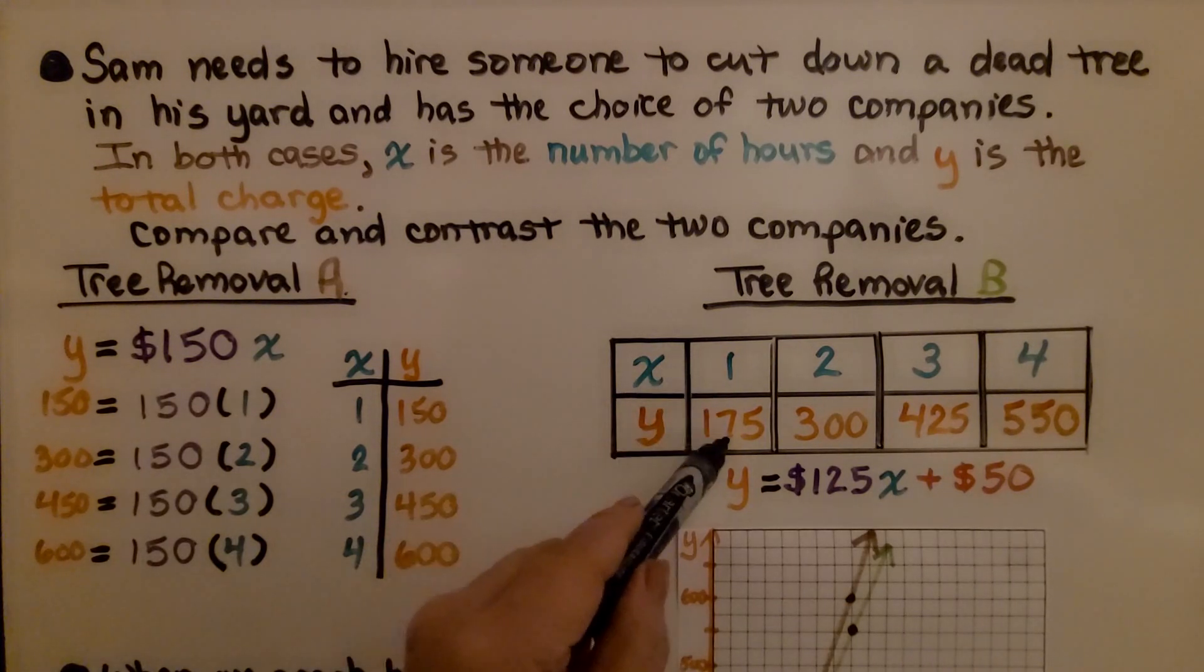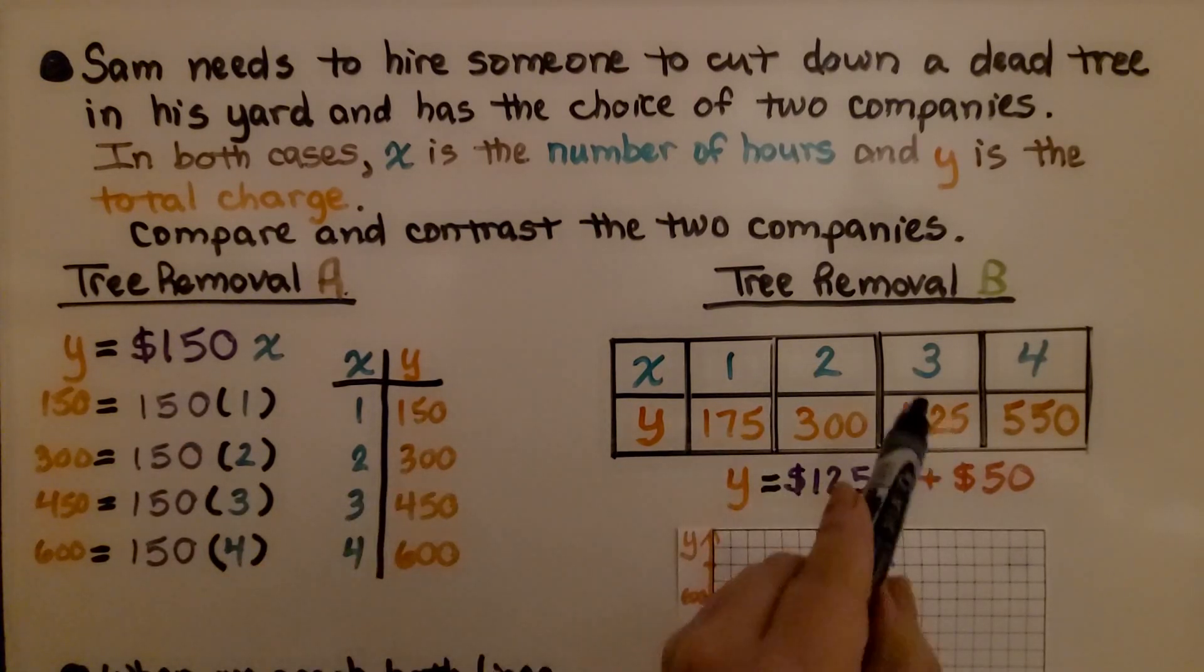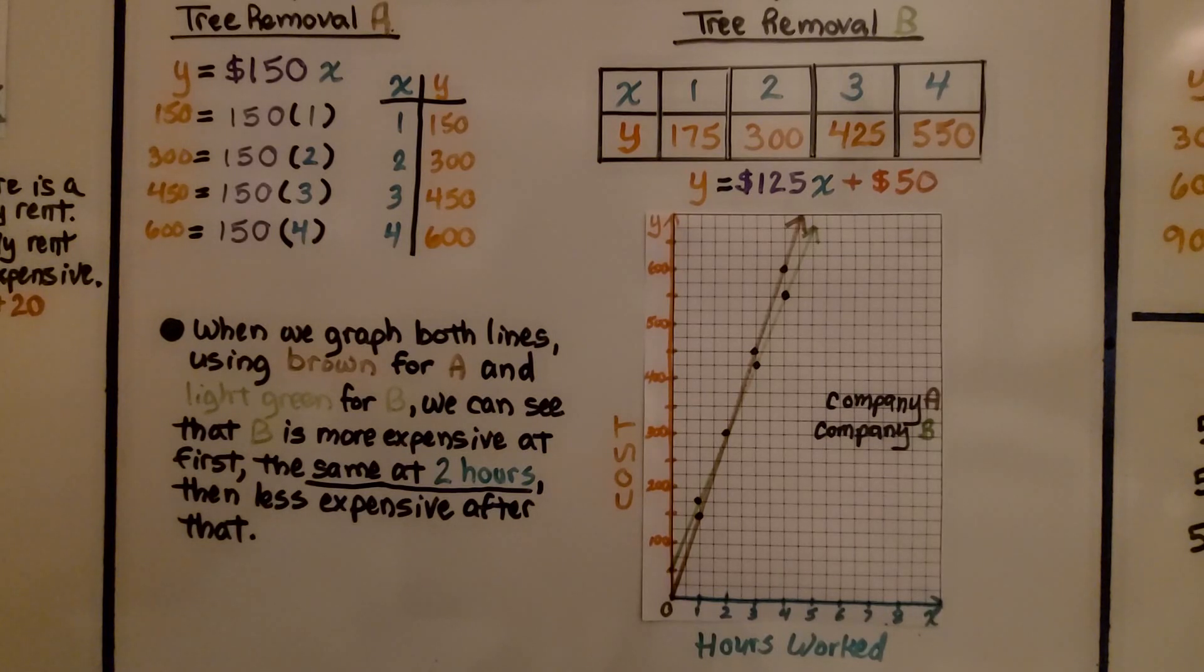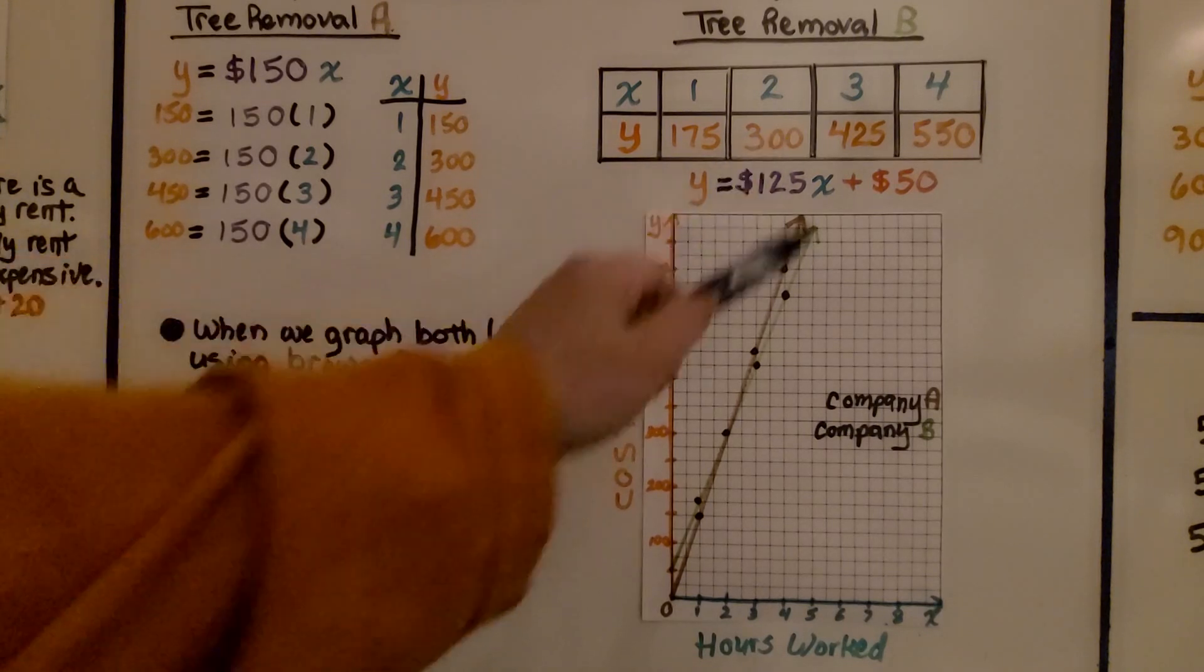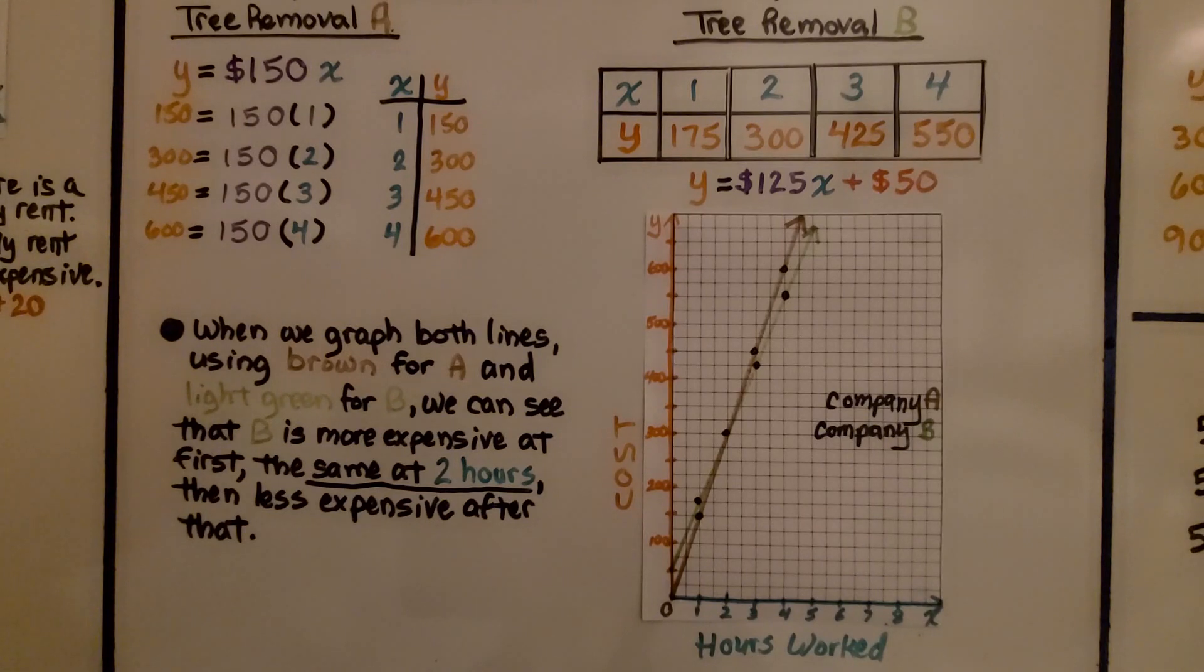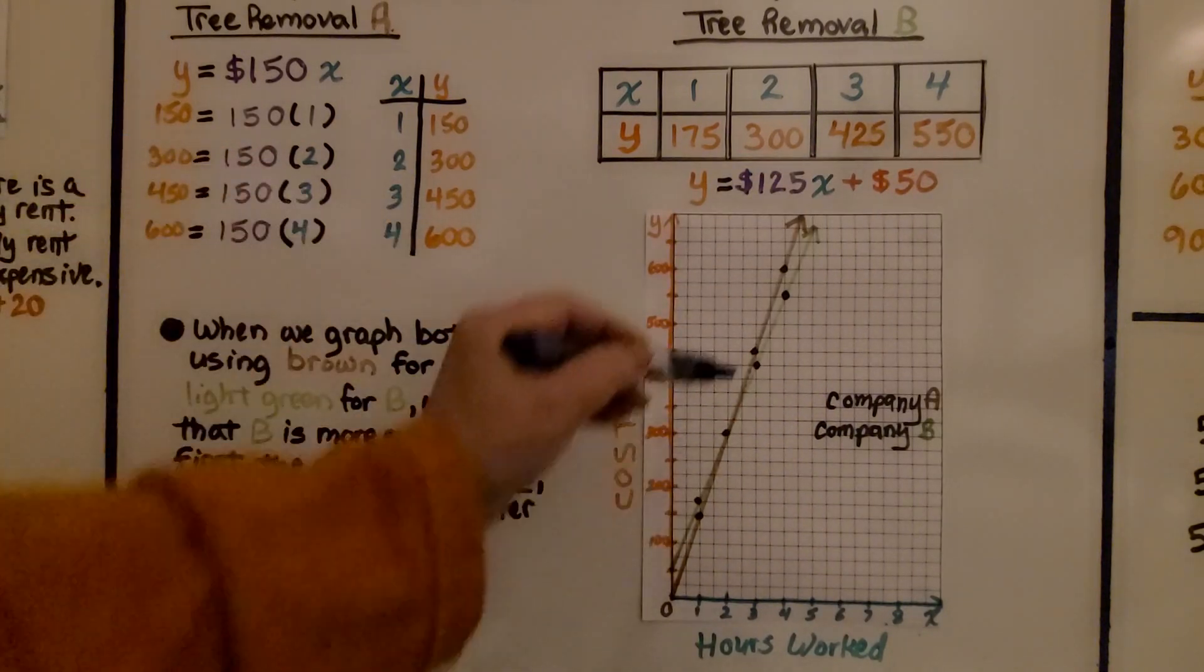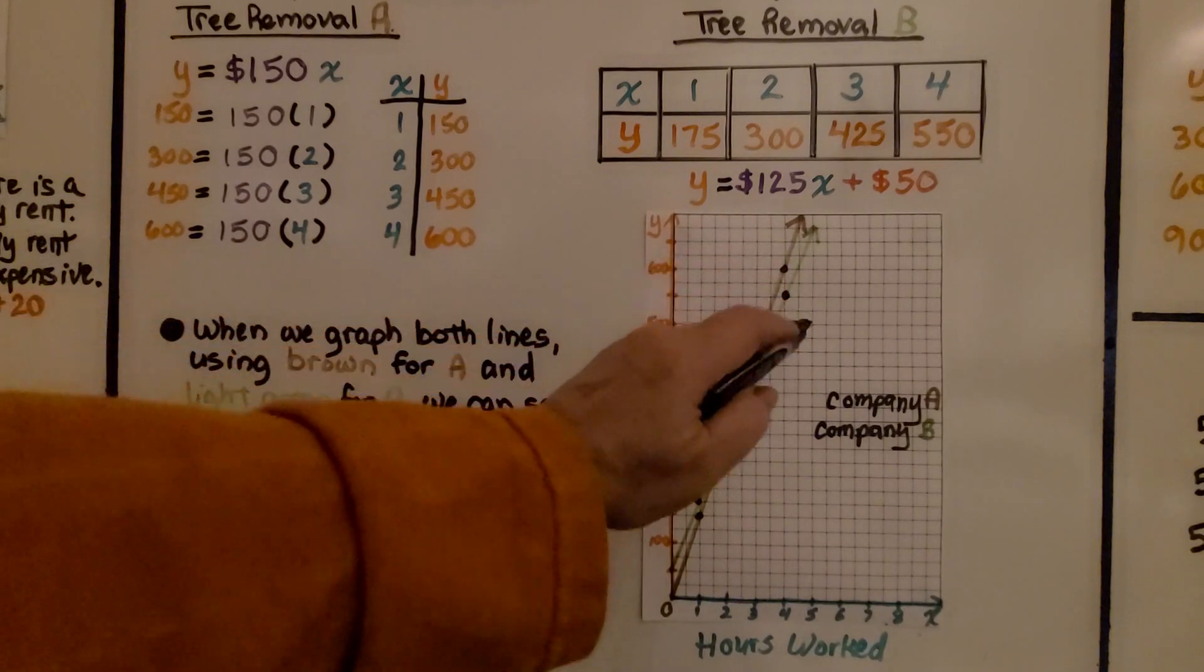Here, we're showing 1 for x and 175 for y. This was only 150. And 2 for x and 300, well that's the same. And 3 for x and 425 for y, well that's less. And 4 for x and 550, well that's less. When we graph both lines using brown for A and light green for B, we can see that B is more expensive at first. It starts higher up on the y-axis, it doesn't start at 0, 0. And it's the same at 2 hours, and we can see that in the table. 2 is 300 for y, 2 is 300 for y, and then it's less expensive after that. Once we get into the 3, 4, our y values are less than for tree removal A. We can see the slope of the line is below this brown one. The brown one has a greater slope than the green one.